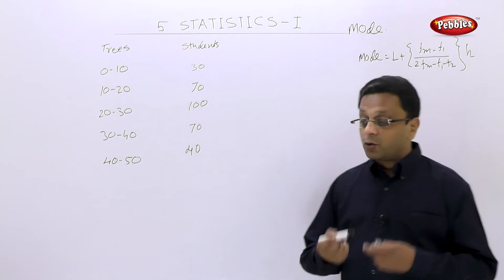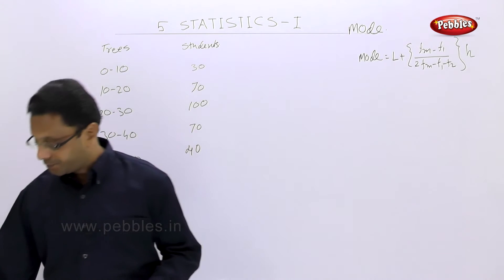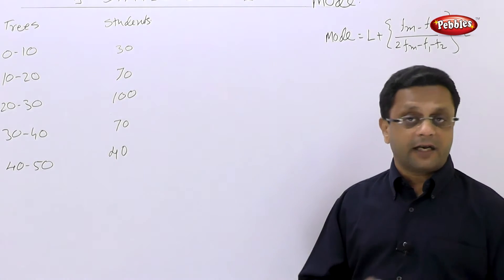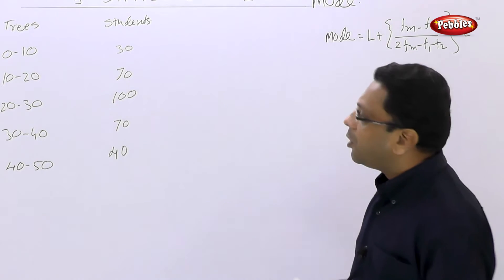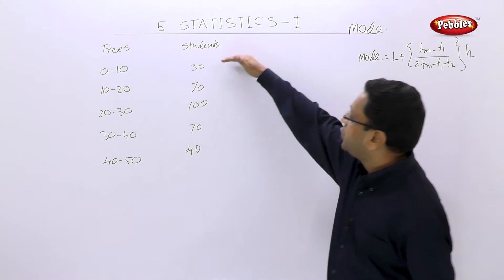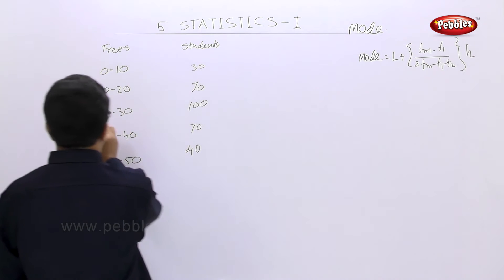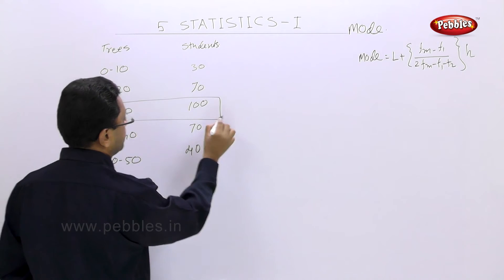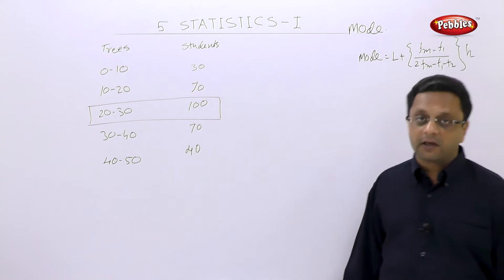Now in this case, you don't even have to find out the cumulative frequency. No calculations are required, no tedious additions or multiplication just like in mean or in median. What you have to do here? Simply find out which is the maximum frequency. In this case, this is the maximum frequency. So this class is called as the modal class.